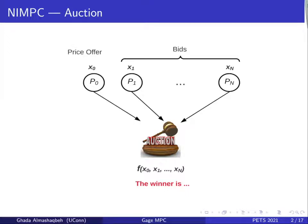In a conventional NIMPC setup, we have a special entity called an evaluator that will be available for the entire period of the computation. We have a set of participants who want to compute a specific function over their private inputs. Each party will submit a message to the evaluator, computed based on its private input without interacting with any other party. Once all messages are received, the evaluator performs the computation and announces the output — in our case, the winner in the auction.